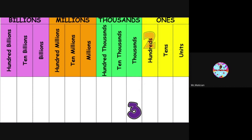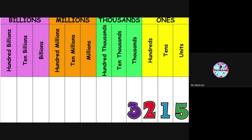Here's another example. Be sure to pause the video and read the number on the screen. Did you say 3,215? 3 sits in the thousands column, 2 sits in the hundreds, 1 sits in the tens, and 5 sits in the units. Now let's look at the value of some of these digits. What's the value of the 3? 3,000. What's the value of the 1? 10.